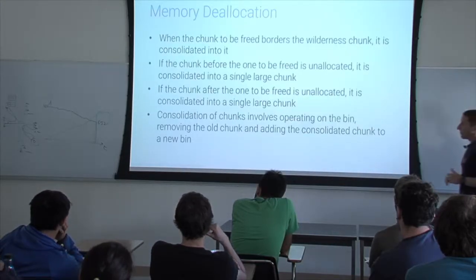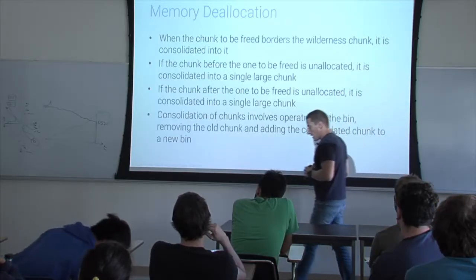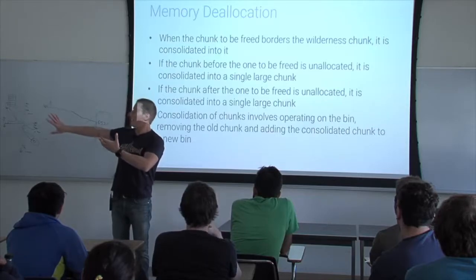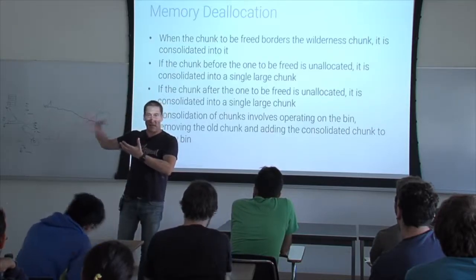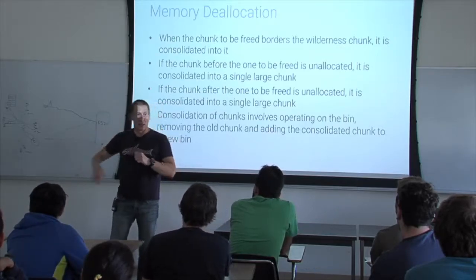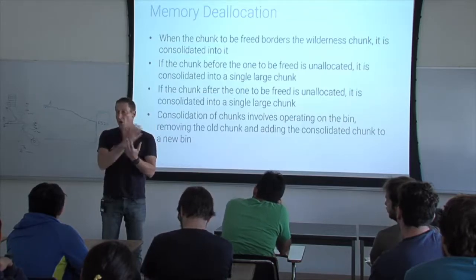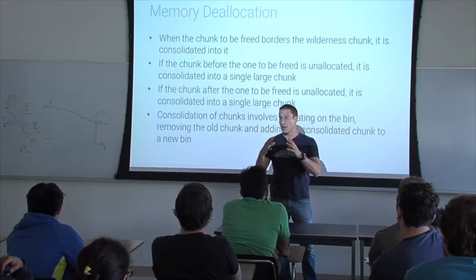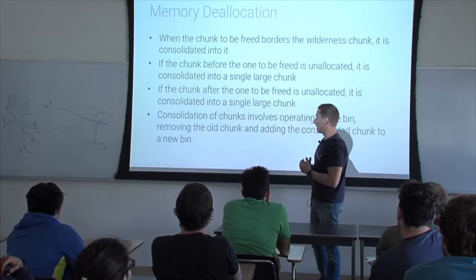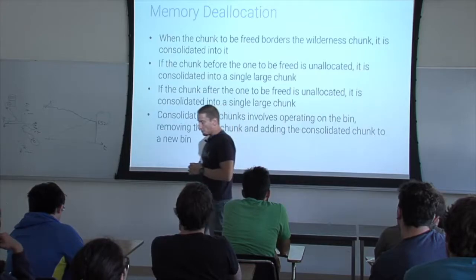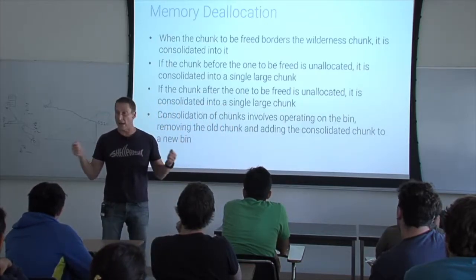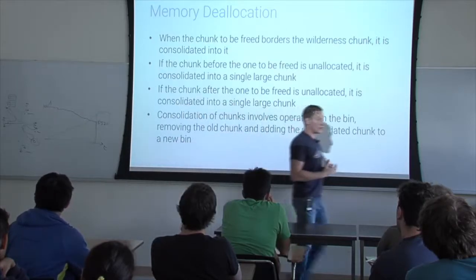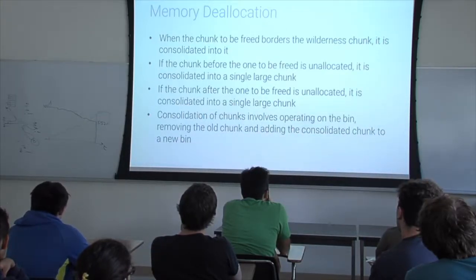The interesting part for us is memory deallocation. When a piece of memory has to be freed, first you check if it's next to the wilderness — if so, coalesce with that. Also if around it there are other free chunks, you coalesce them together to reduce fragmentation. This consolidation of chunks implies adjusting the pointers that link all the different chunks, and then we have to insert the new big chunk into a bin. There are macros to do this — removing chunks from a list and inserting chunks into a list.